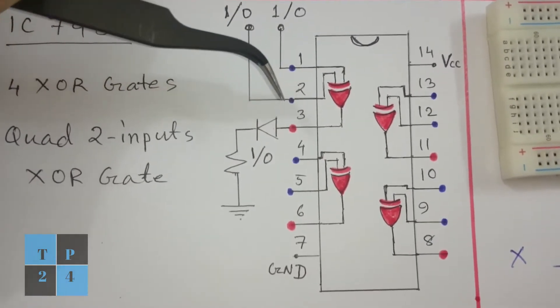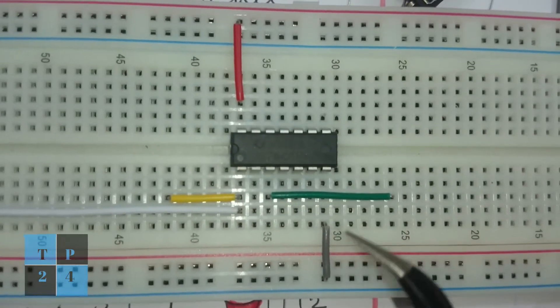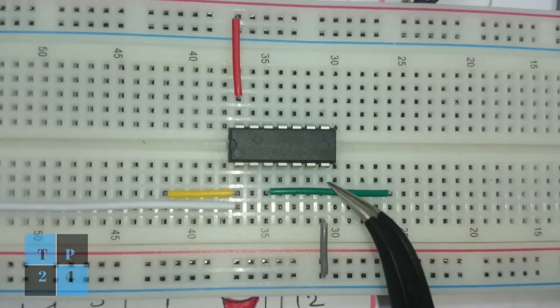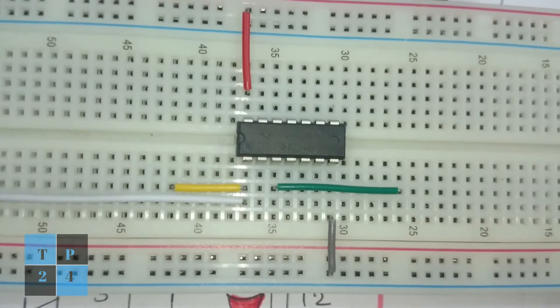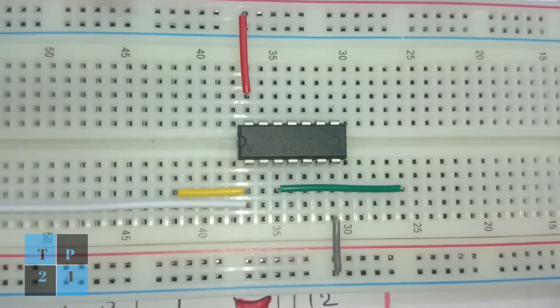Let us jump and construct the circuit. Here I connected the ground to pin number 7 and I connected the positive rail to pin number 14.